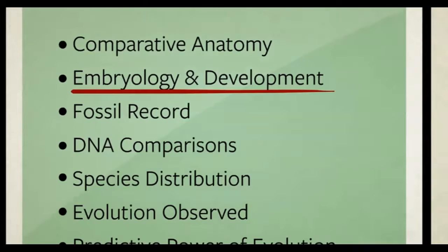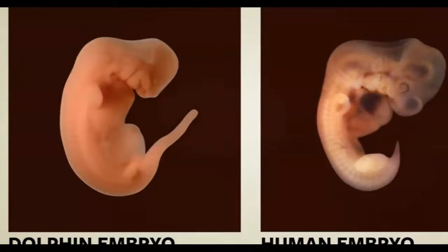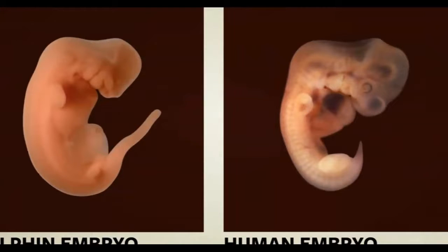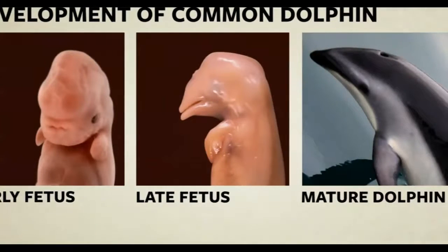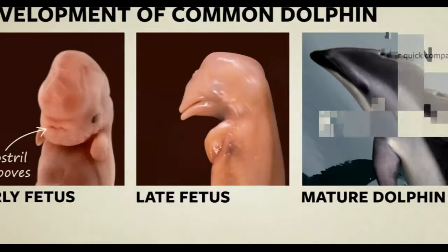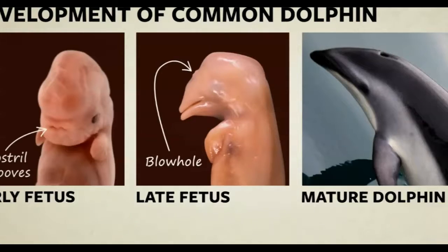Before drawing bold conclusions, let's see if a separate line of evidence confirms our suspicions. Embryology is the study of how creatures develop before being born or hatching from an egg. A dolphin and a human embryo side by side at similar stages of development both have what look like arm buds and leg buds. In humans the leg buds grow to become legs; in whales they grow for a while but then stop, fading away. Early on, a common dolphin embryo has two nostril grooves on the front of the face — as the dolphin continues to grow, the nostrils migrate to the top of the head and fuse together, becoming the blowhole.